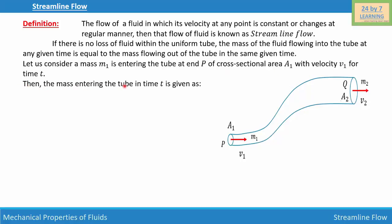The mass entering the tube in time t is given as m₁ = ρV₁ where ρ is the density of the fluid and V₁ is the volume of the liquid entering the tube at point P. That equals ρA₁x₁ where x₁ is the distance traveled by the fluid in time t.